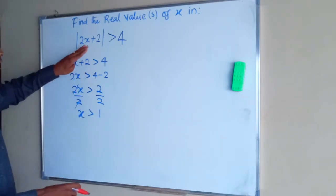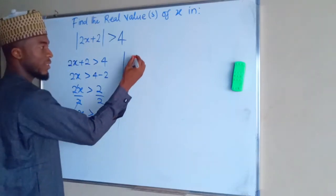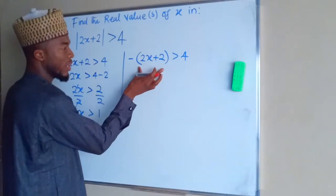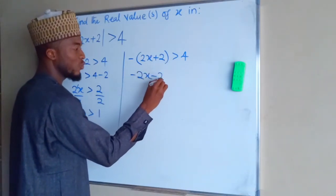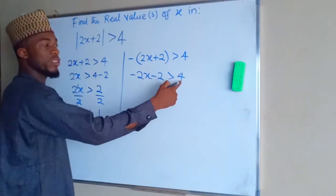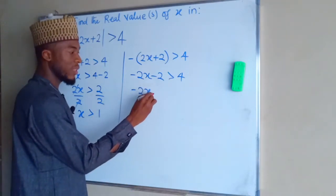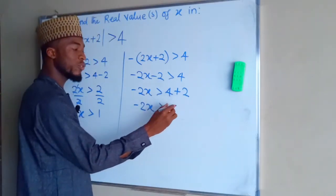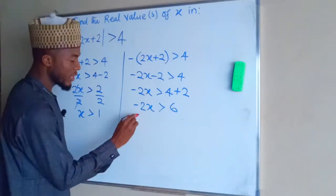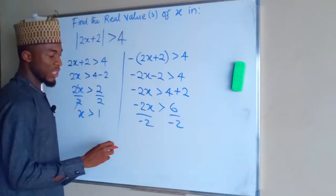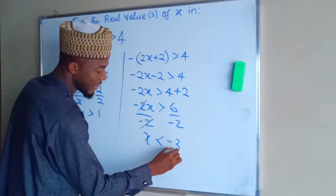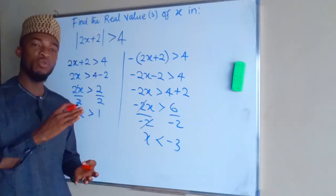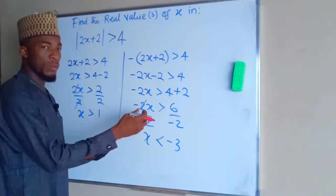Now we assume the expression is a negative value. For that case we have negative of (2x plus 2) greater than 4. Expanding the bracket gives minus 2x minus 2 greater than 4. Moving minus 2 across the inequality sign makes it positive, so minus 2x is greater than 4 plus 2, which is 6. Dividing both sides by negative 2, and because we divide by a negative number the inequality flips, so x is less than negative 3.